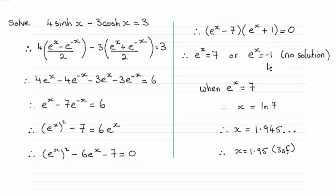So when e to the x equals 7, take natural logs to both sides, leading me to x equals natural log of 7. Or as I said earlier, if you round it to 3 significant figures, it's 1.95. Okay?